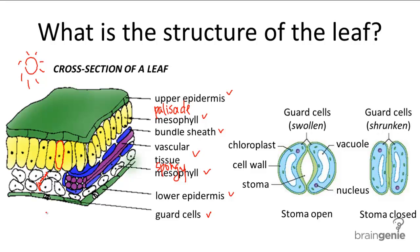Both types of mesophyll cells receive the necessary water from the vascular tissues and carbon dioxide from the guard cells. We're more familiar with the openings that the guard cells create, which we know as the stomata, or stoma for singular, and these cells are embedded into the lower epidermis, or the bottom-most layer of the leaf.